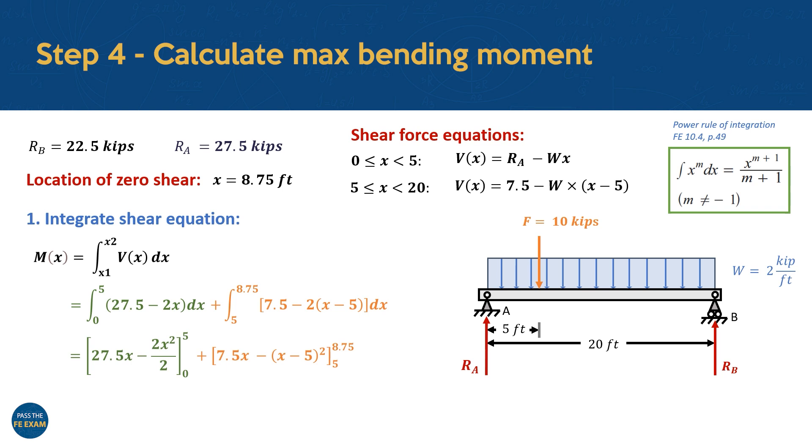We can integrate these functions using the basic power rule of integration. In doing so, we increase the x exponent of each term by 1, and then we divide that term by its new exponent. Next, we apply the integration limits by substituting them into each respective equation and subtracting the results. In the first case, we substitute the upper value of 5, which gives 27.5 times 5, negative 2, times 5 squared, divided by 2. Since the lower limit of this integral is 0, substituting it will also result in 0. So we simply work with this first term.